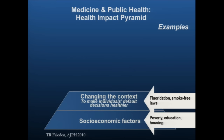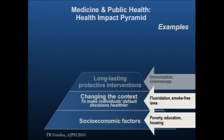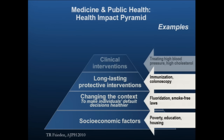The second thing we can do is changing the context — what he calls policy interventions like fluoridation, smoke-free laws — things that are not personalized but mostly one-size-fits-all, where changing the policy at the population level may actually help the health of millions of people. Then there are long-lasting protective interventions like immunizations and colonoscopies that may prevent disease in the long run. And then he puts clinical intervention somewhere up here, where treatment works on a slice of the public health pie — this is the individualized part of medicine. All medicine should be personalized, and I think precision medicine is the craze word we use, but we have more tools to make medicine work better.